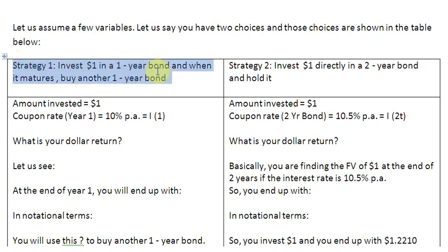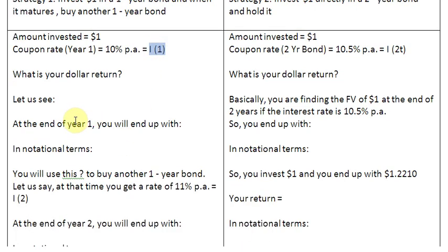Let us return to strategy one: invest one dollar in a one-year bond which is offering an interest rate — the coupon rate — of 10 percent per annum, denoted as i1. We are going to find out our dollar return: what is the amount of money we end up with at the end of the first year? We are investing one dollar and multiplying it by one plus 0.10, giving us an ending amount since the interest rate is 10 percent, so inside the bracket we write 1.10.